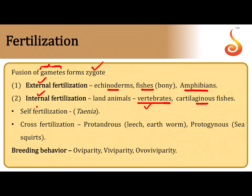Depending on the source of gametes, if both the male and the female gamete originate from the same parental body, we call it self fertilization, which is seen in hermaphrodites like tapeworm or Tinea. If the sperm is derived from one parent and the egg is originating from another parent, then we call it cross fertilization.